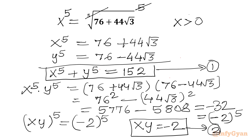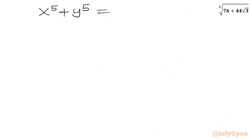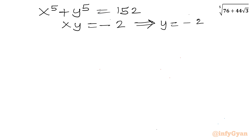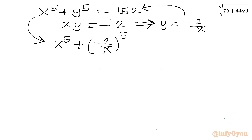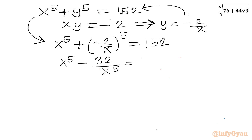So here we have our first equation: x power 5 plus y power 5 is 152, and x times y equals negative 2. Let's solve this system of equations. From xy = -2 we can write y equal to negative 2 over x, and substitute into equation 1. So we have x power 5 plus (-2/x) power 5 equal to 152, or x power 5 minus 32 over x power 5 equals 152.